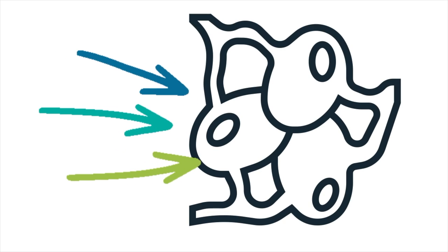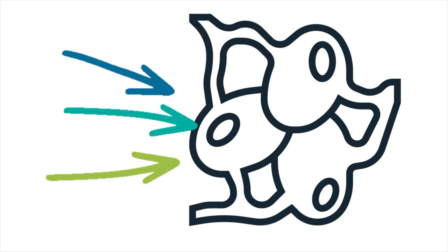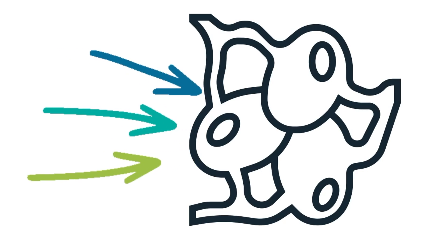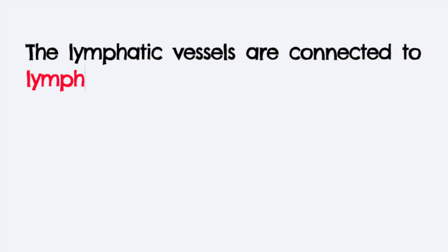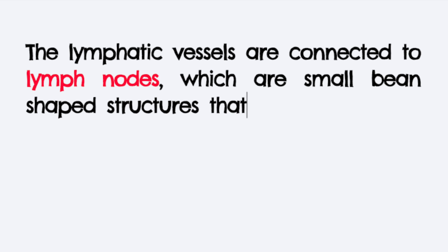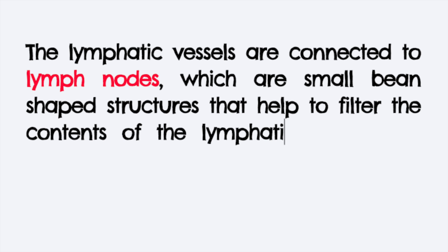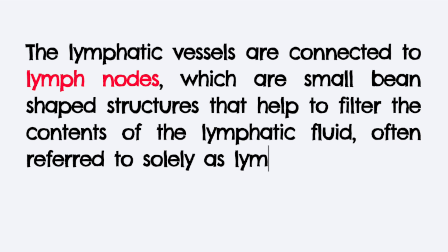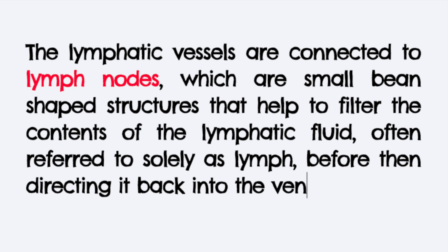Structurally, the system consists of lymphatic vessels which can be thought of as similar to the veins and capillaries of the circulatory system. These vessels are connected to lymph nodes, which are small bean-shaped structures that help to filter the contents of the lymphatic fluid, often referred to solely as lymph, before then directing it back into the venous system.